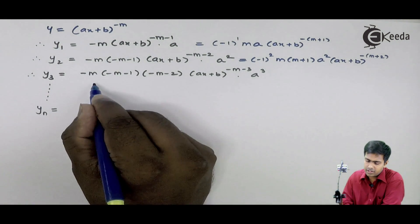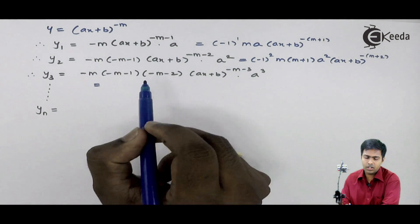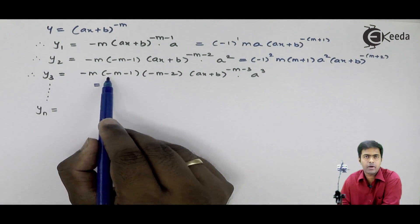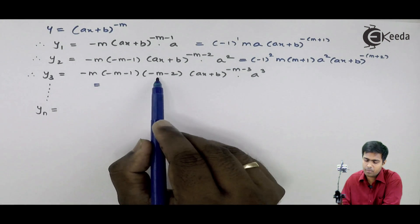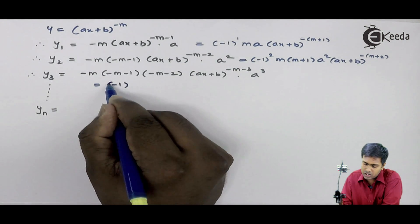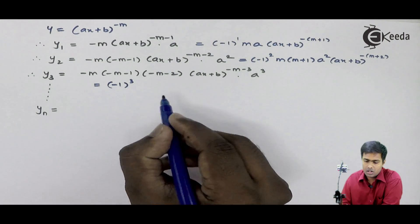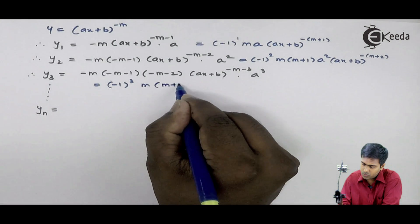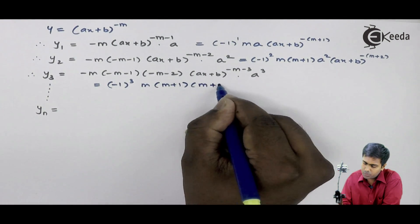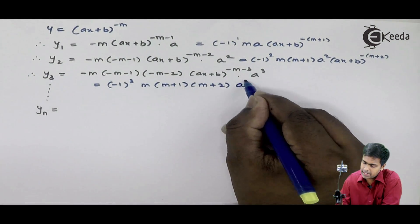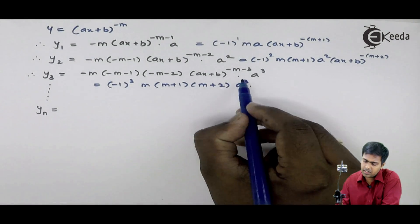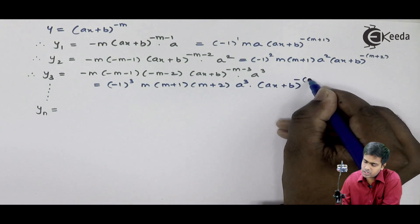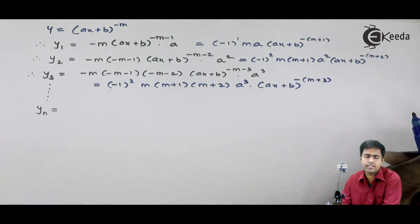Similarly, rewriting the third term y3: there are three negative signs — one from minus m, one from minus m minus 1, and one from minus m minus 2 — so we write this as (−1)^3. The terms become m, m+1, m+2 (all positive), times a cubed, times (ax + b) raised to minus (m + 3).